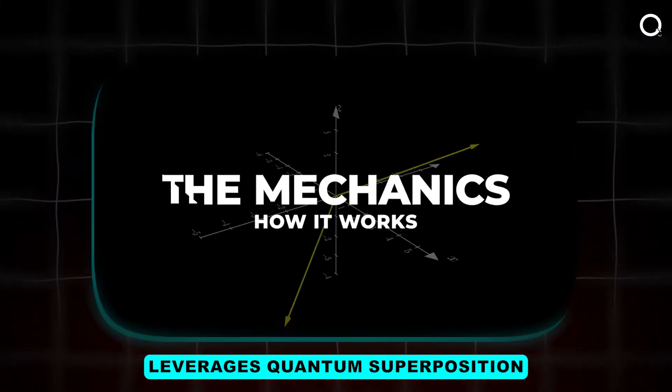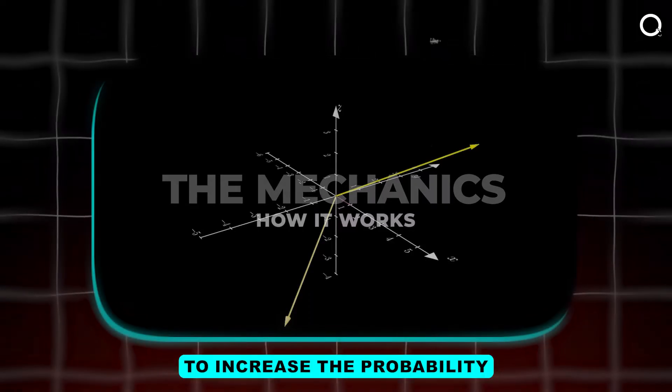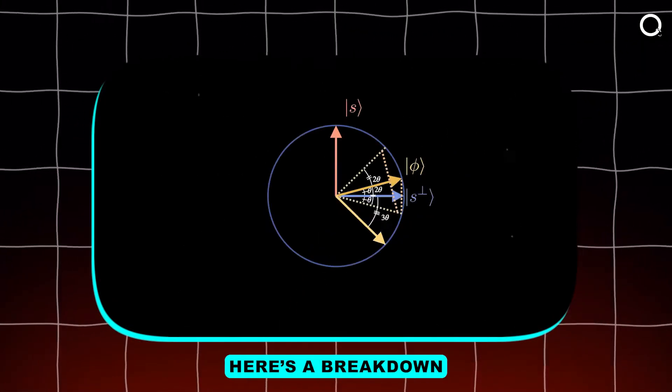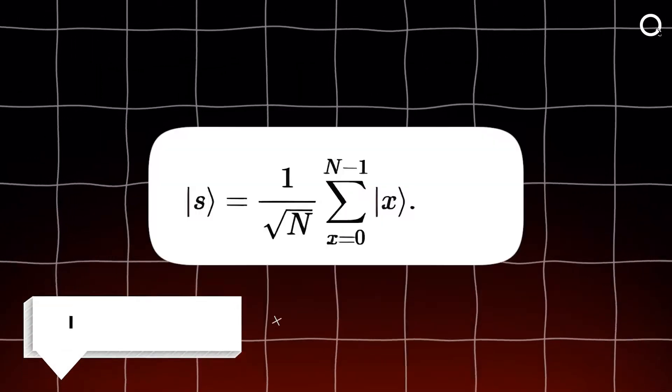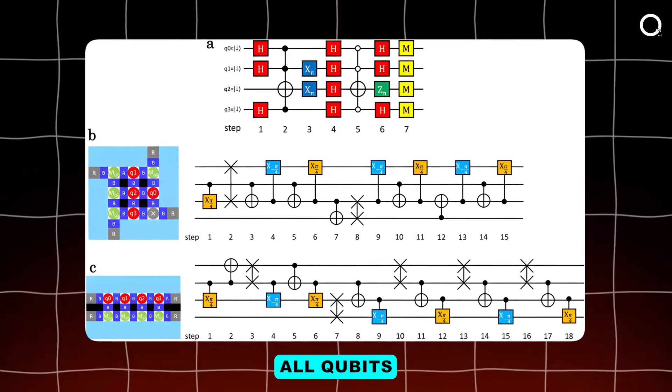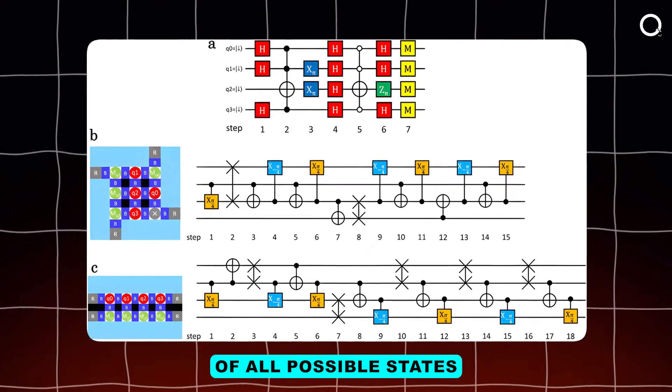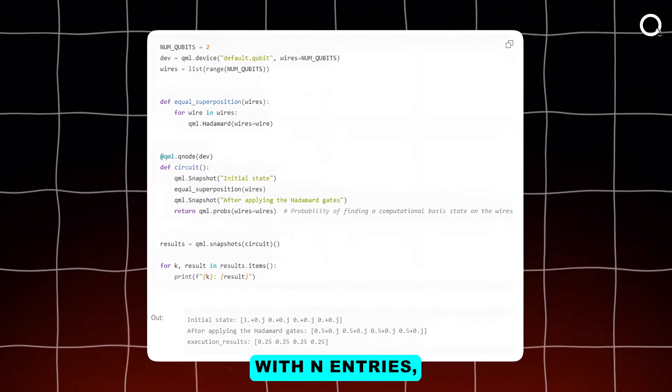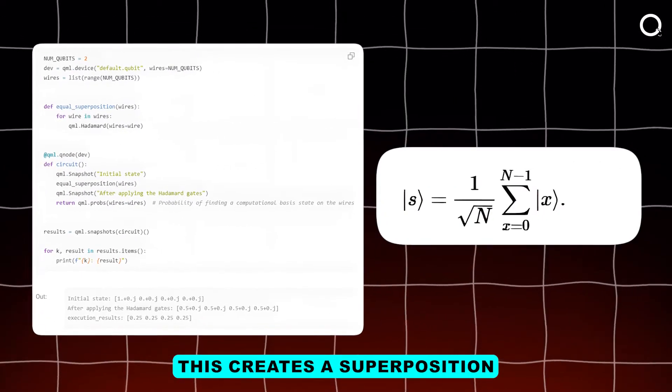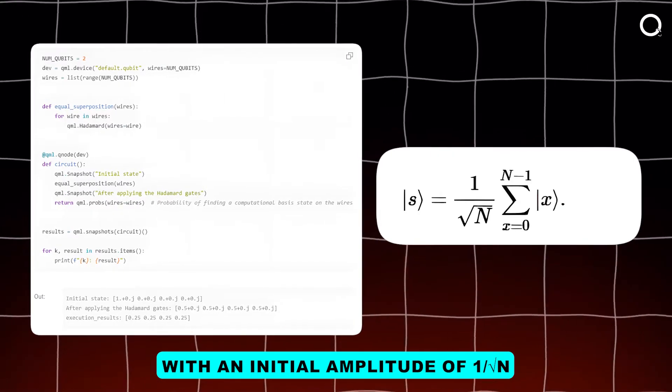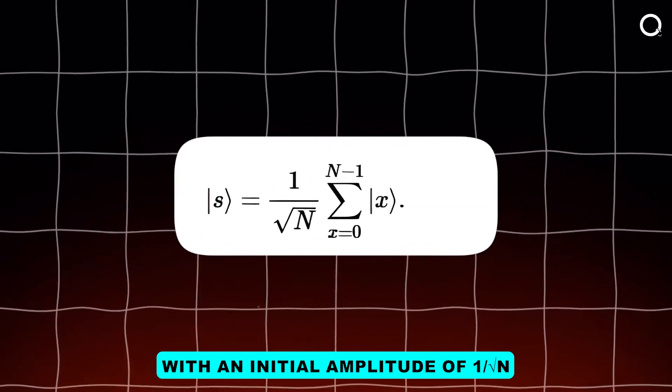Grover's algorithm leverages quantum superposition and interference to increase the probability of finding the correct result in fewer steps. Here's a breakdown of its core steps. Number one: initialization. The algorithm starts by placing all qubits into a superposition of all possible states using Hadamard gates. If you're searching through a database with N entries, this creates a superposition where each entry is equally likely with an initial amplitude of 1 over the square root of N.